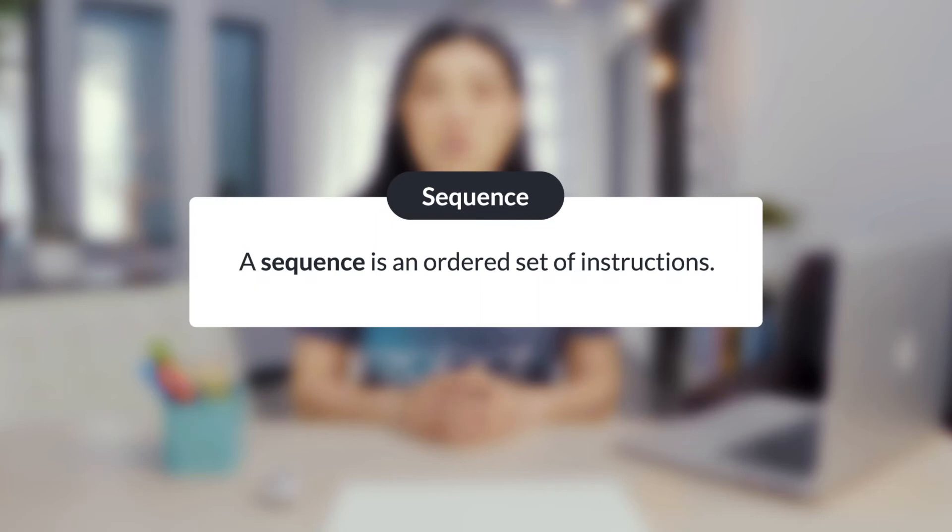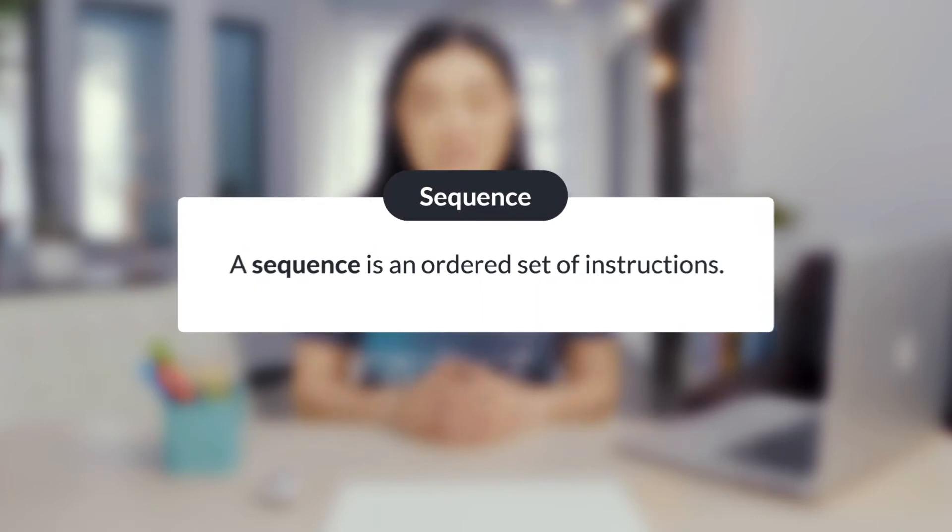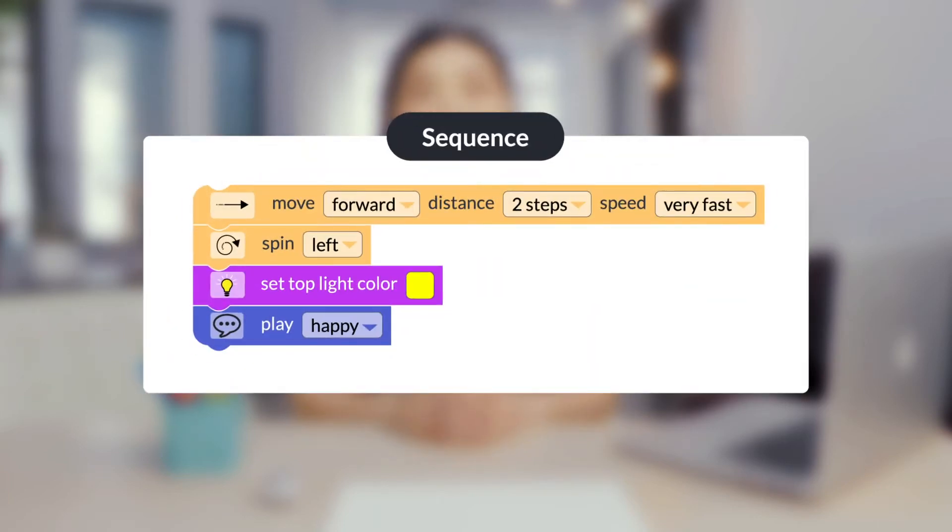A sequence is an ordered set of instructions. Here's an example. The sequence of this program tells Ozobot to move forward two steps, spin left, display a yellow colored LED, and play a happy sound.